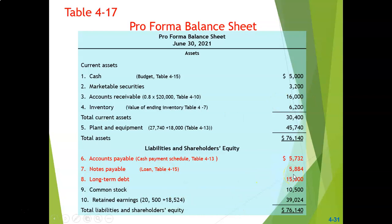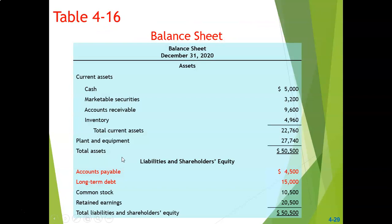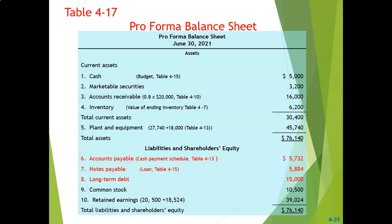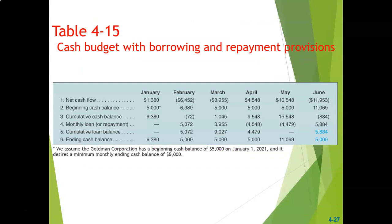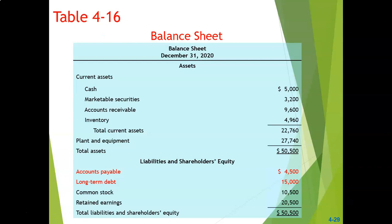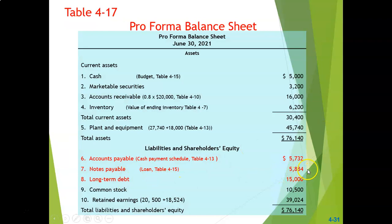Notes payable is a new item we are introducing into the balance sheet — it wasn't in our original balance sheet — and it represents our loan. Table 4-1-5 shows a cumulative loan balance of 5,884. This accumulated loan balance represents the outstanding loan and is shown in our balance sheet as notes payable. Remember, notes payable is usually a short-term loan, and in our cash projection situation it was always a short-term loan.